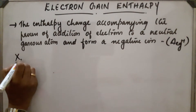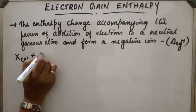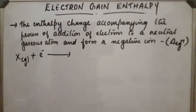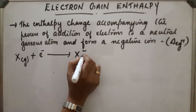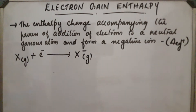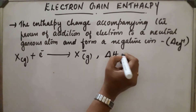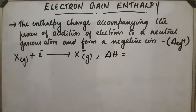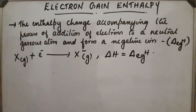Let X be the neutral gaseous atom. One electron is added and a negative ion is obtained. During this process there is a release of energy, so delta H here will be delta EGH — there will be an enthalpy change.